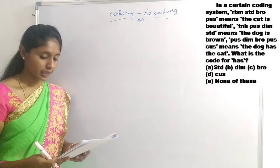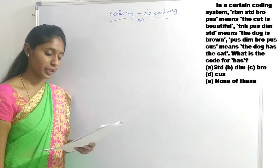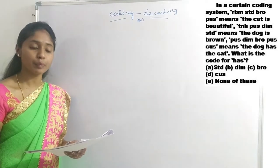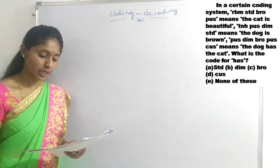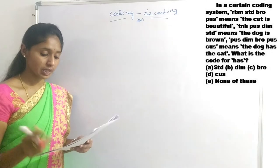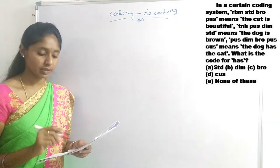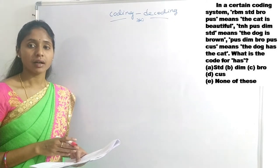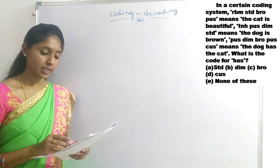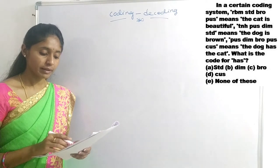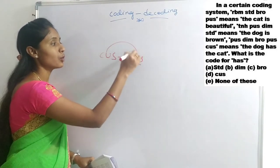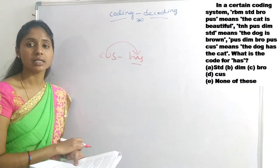Next question: In a certain coding system, 'RBM STD broke PUS' means 'the cat is beautiful', 'TNH PUS DIM STD' means 'the dog is brown', and 'PUS DIM broke CUS' means 'the dog has the cat'. What is the code for 'has'? STD, DIM, and BRO are all repeated. CUS appears only once, and 'has' also appears only once. So CUS is coded for 'has' — option D is the right answer.